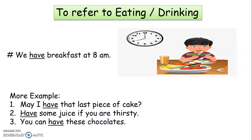Let's see more examples. First, 'May I have the last piece of cake?' To indicate eating, we make use of the verb 'have'. Second, 'Have some juice if you are thirsty.' To indicate drinking, we make use of the verb 'have'. Third, 'You can have these chocolates.' To indicate eating, we make use of the verb 'have'.